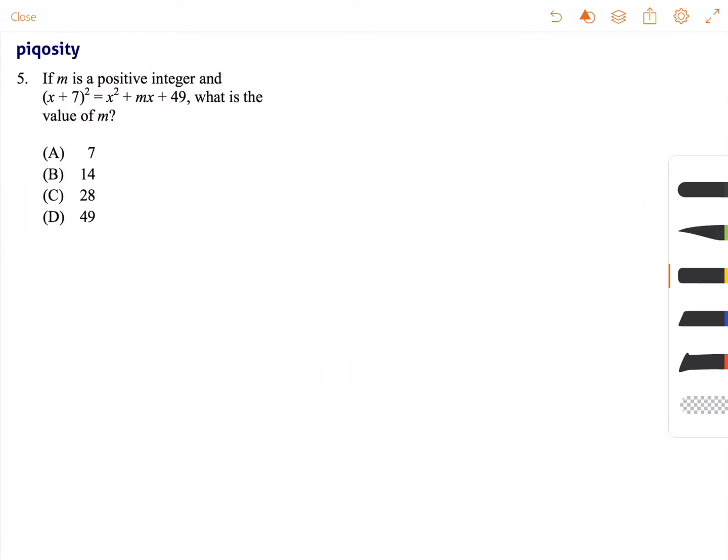The question reads: if m is a positive integer and (x + 7)² equals x² + mx + 49, what is the value of m? Ultimately it's testing whether you understand if one side is equal to another, that means they're going to have similarities where the values are going to be placed.